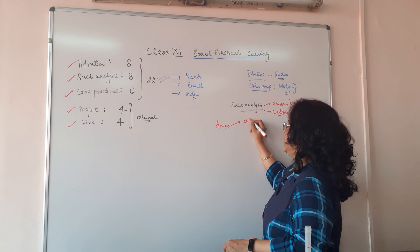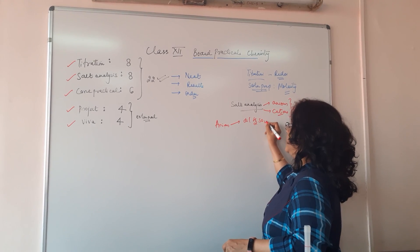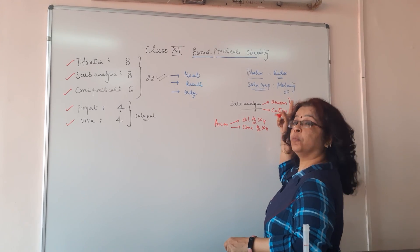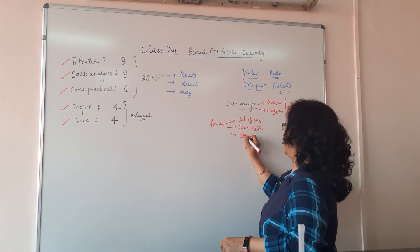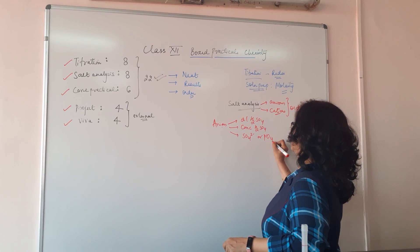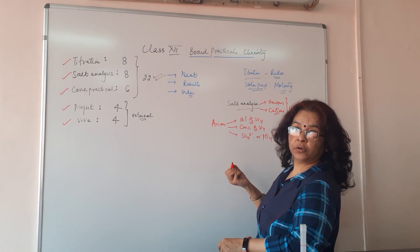When you are on anions, first step is with dilute sulfuric acid. Observe a gas. Then you have concentrated sulfuric acid. Observe the gas. And then you have sulfate or phosphate which can be very low salt.